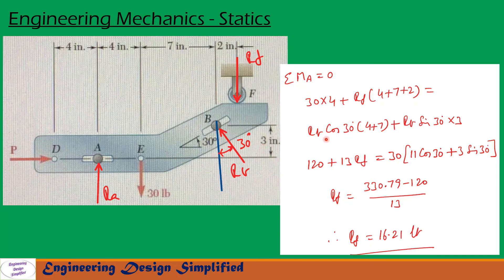The vertical component of R_B is R_B cos 30, acting over a horizontal distance of (4 plus 7) inches, and the horizontal component R_B sine 30 acts over the vertical distance of 3 inches from A to B. After substituting all values and simplifying, we get R_F equal to (330.79 minus 120) divided by 13, giving R_F equal to 16.21 LB.